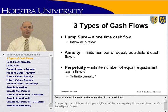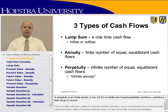An annuity is a finite number of equal, equidistant cash flows. And a perpetuity is an infinite annuity — an infinite set of equal, equidistant cash flows that will go on forever.